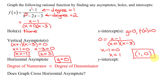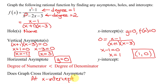So now I can answer the question: does the graph cross the horizontal asymptote? Yes, it's going to cross it at the x-intercept, and nowhere else.